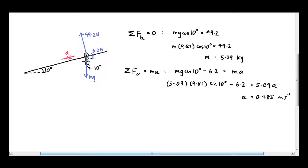And we have the weight which has a component down along the slope. And that component of weight along the slope can be written as mg sin 10 degrees. So mg sin 10 degrees, which is down along the slope, minus 6.2 N, which is up along the slope, can be equated to the mass times its acceleration.